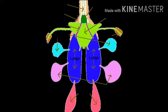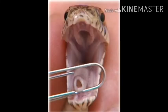Respiration in lower unicellular animals or organisms like amoeba and paramecium — the exchange of respiratory gases, that is oxygen and carbon dioxide, occurs through the cell membrane by diffusion.